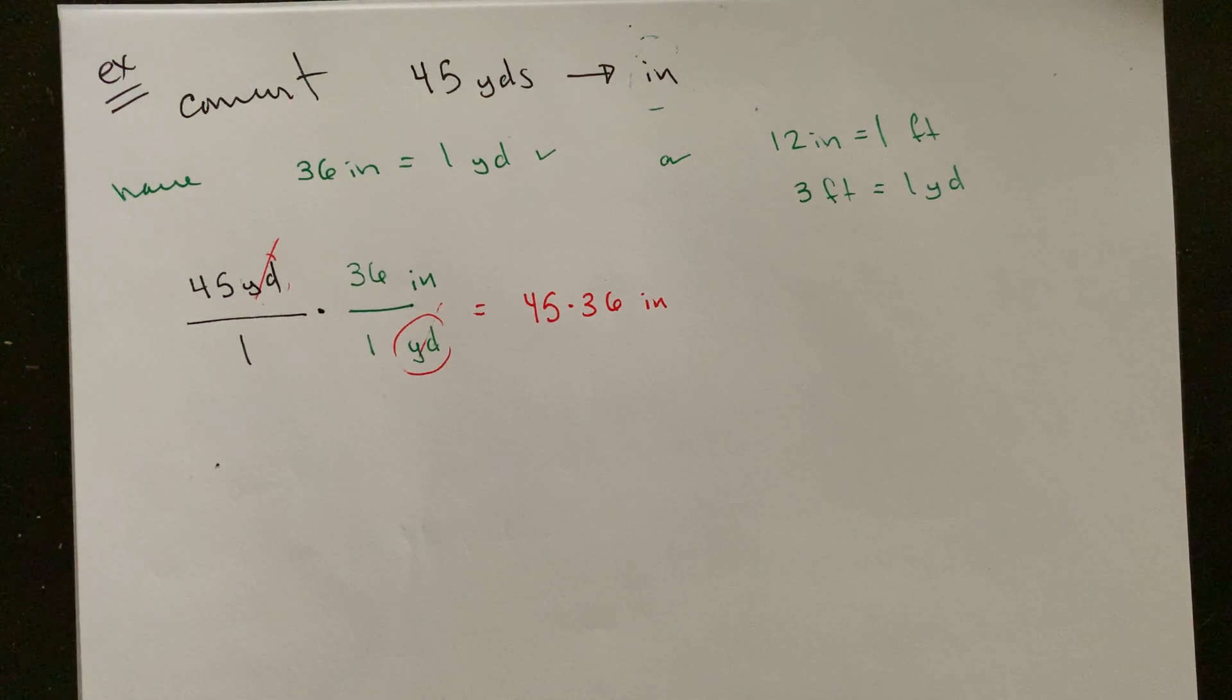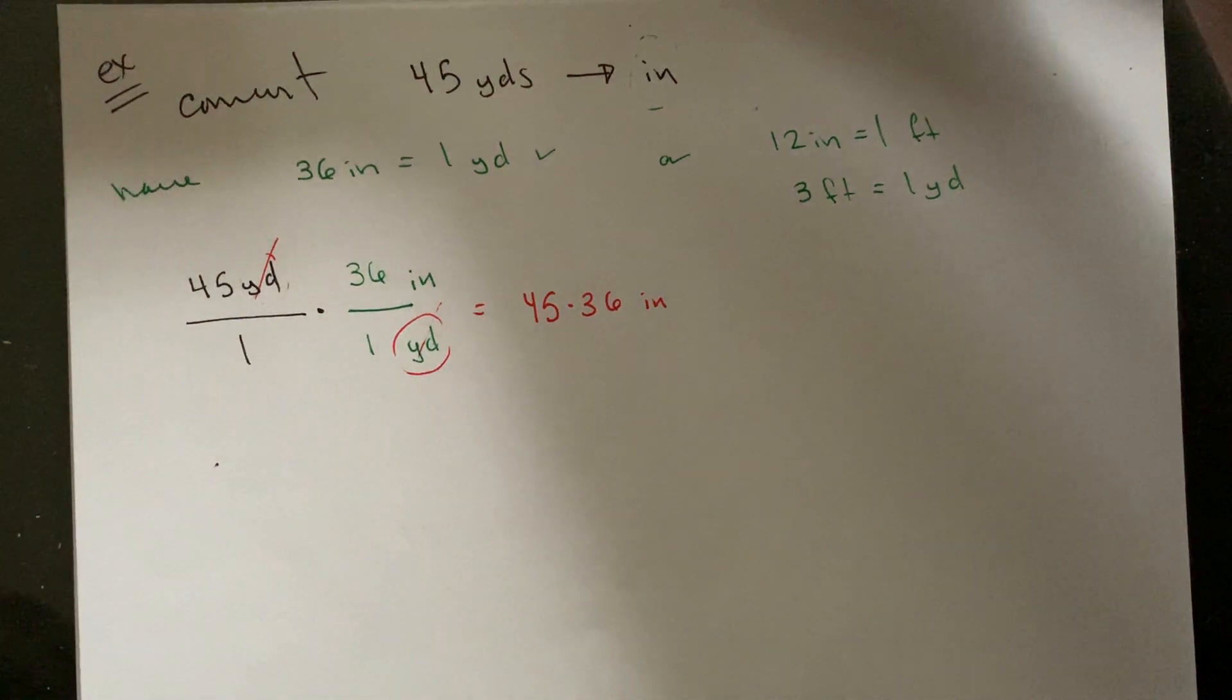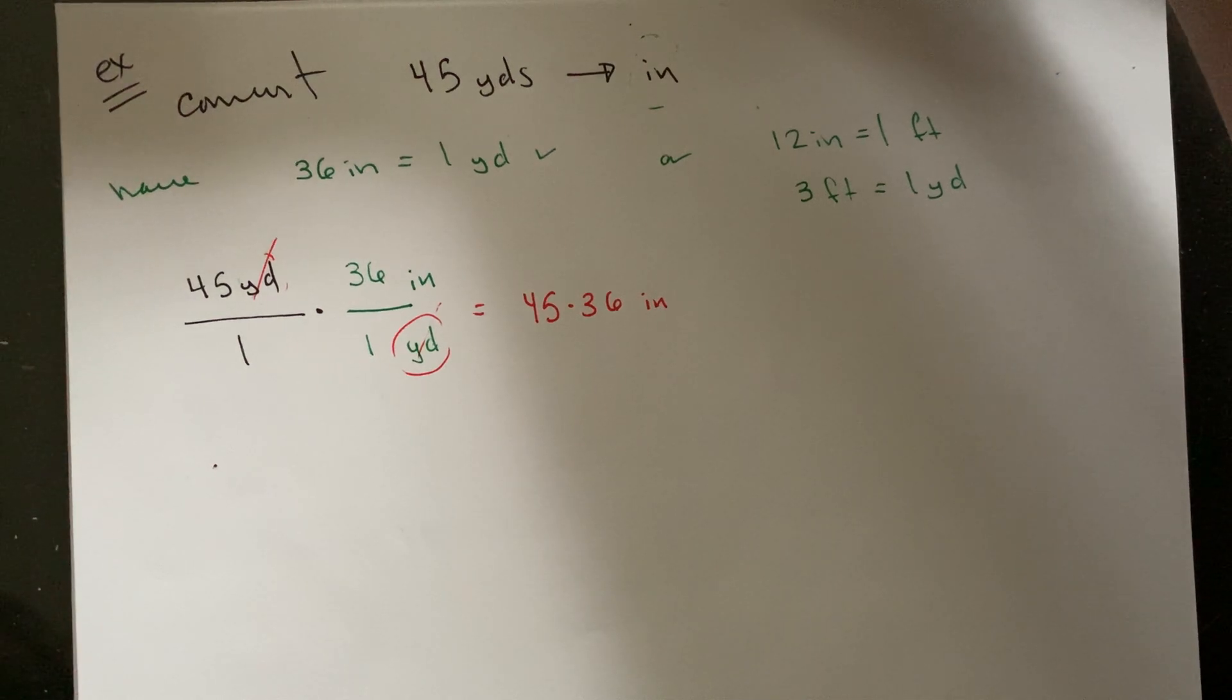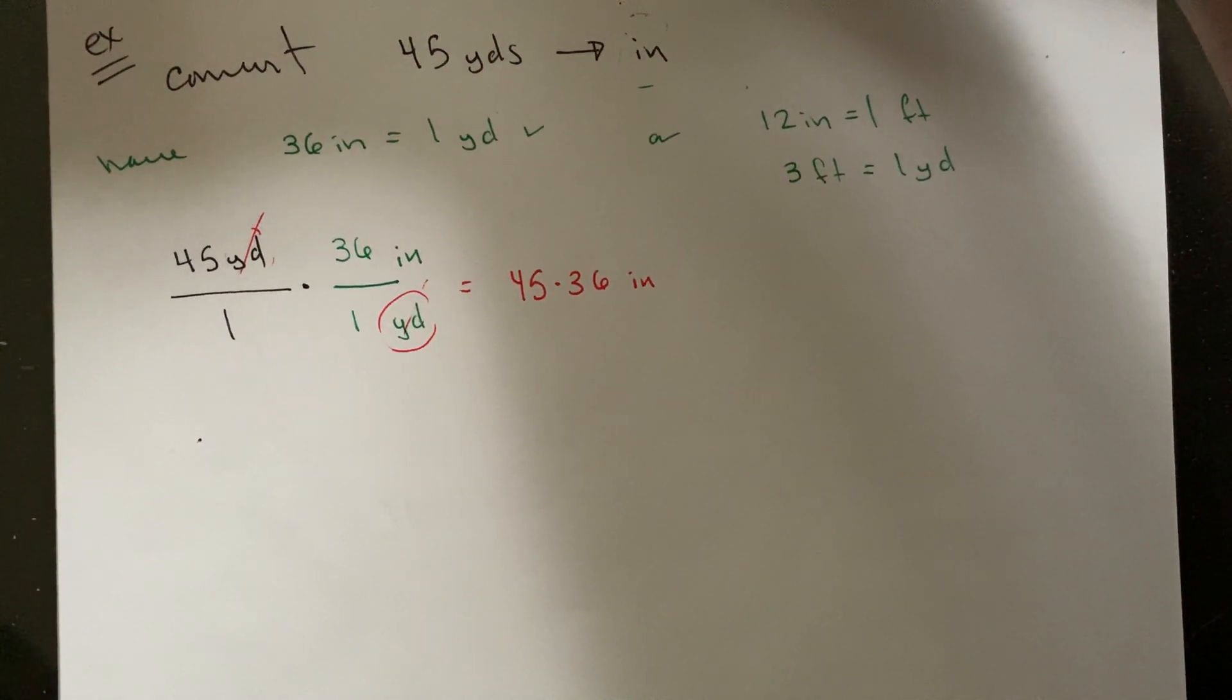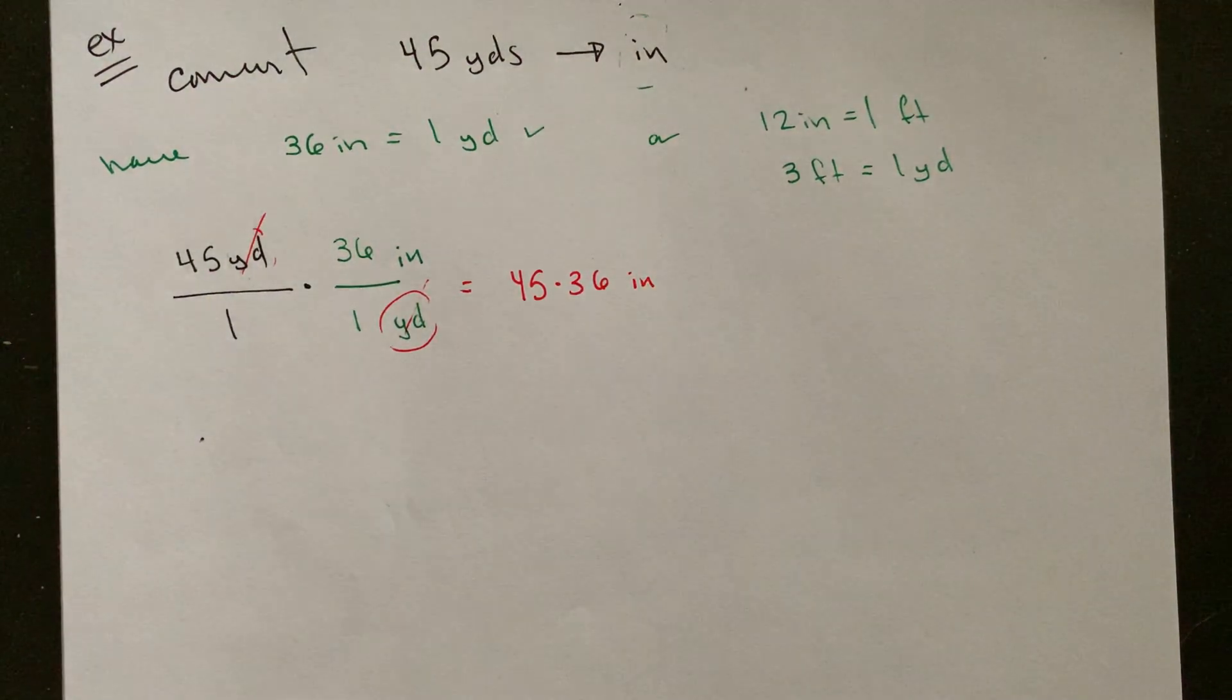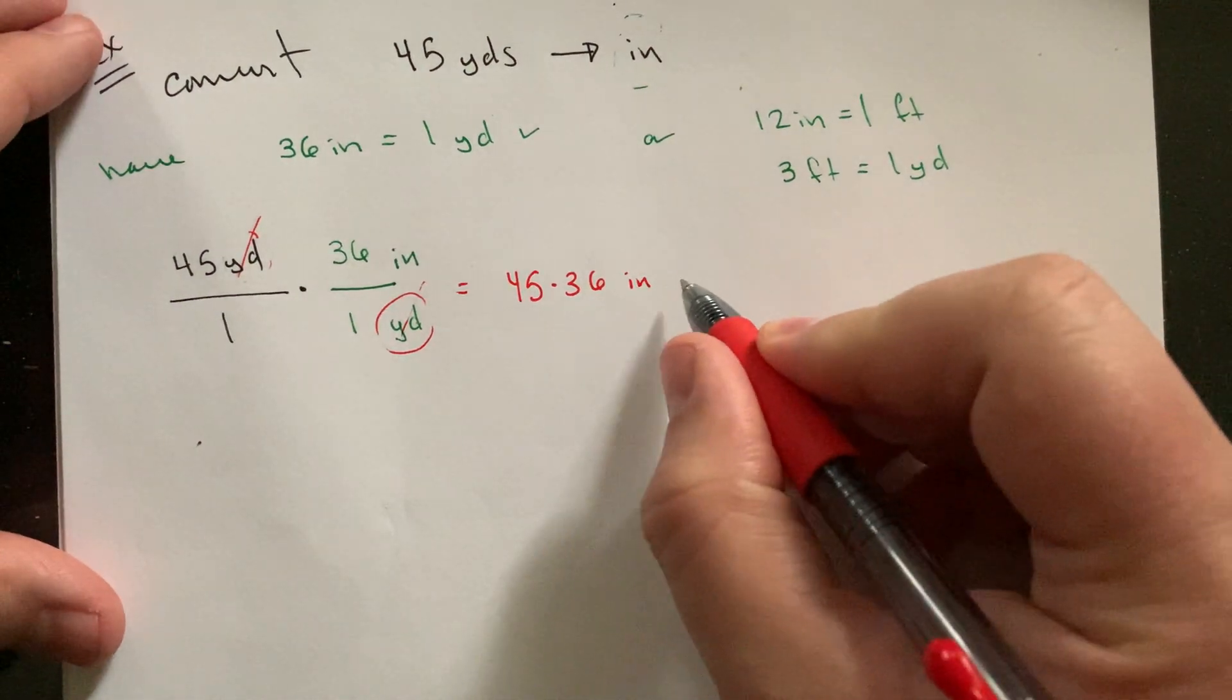45 times two would be 90, so this would be like 90 times 18. I think this is one I'm just going to cheat for a second. And just for the sake of this video, I'm trying to speed things up. I'll just do a quick calculation here. This is going to end up at 1620 inches.